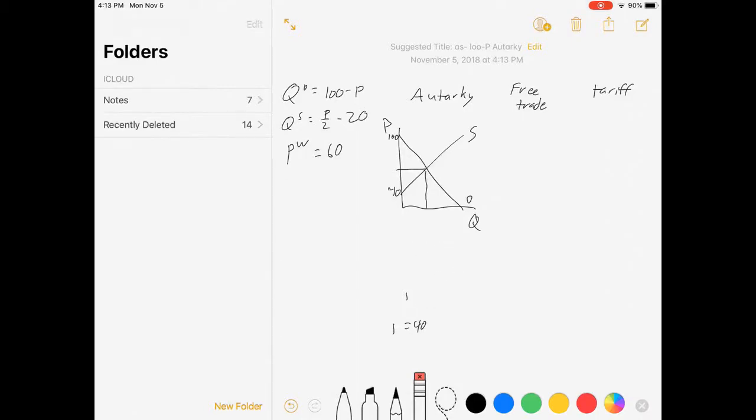Now I want to find equilibrium. I just set my two equations equal to each other. I set QD equal to QS. 100 minus P equals P half minus 20. That's 120 equals 3 halves P, which means that P is equal to 80. Here's our equilibrium price under autarky. Now I substitute that into either function to get our quantity. Q equals 100 minus 80 is 20. That is all the information I need to get started. We're in equilibrium. Our quantity supplied equals our quantity demanded. So there's not going to be any deadweight loss, any shortage or surplus, or any trade. Nothing. This is autarky.